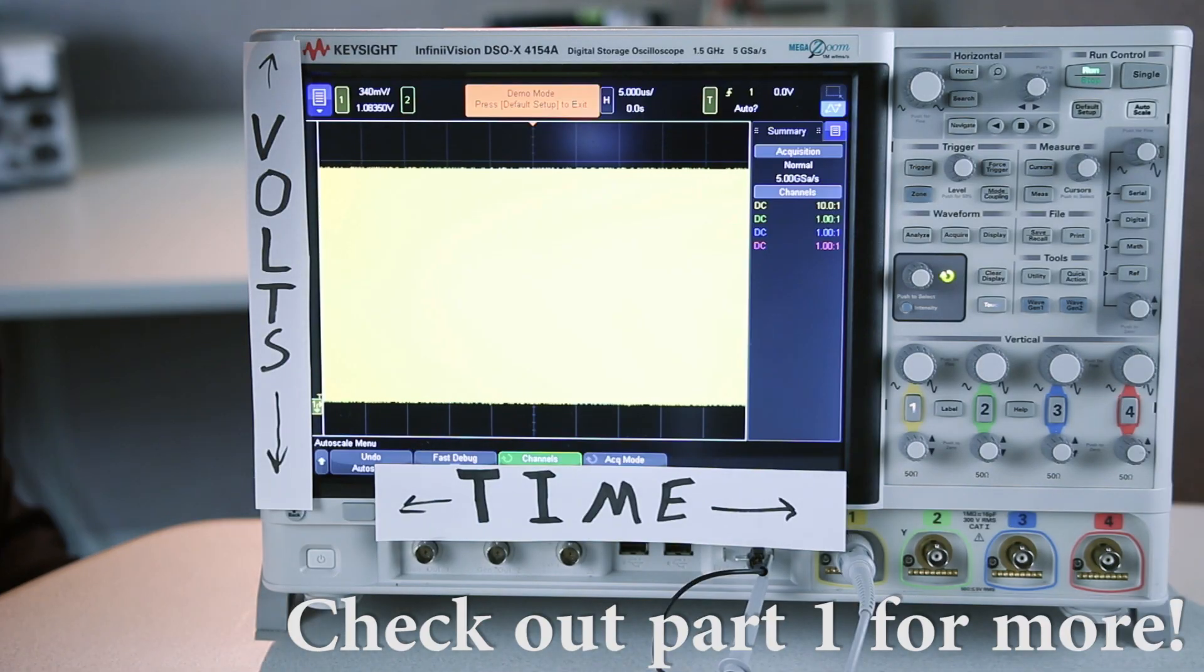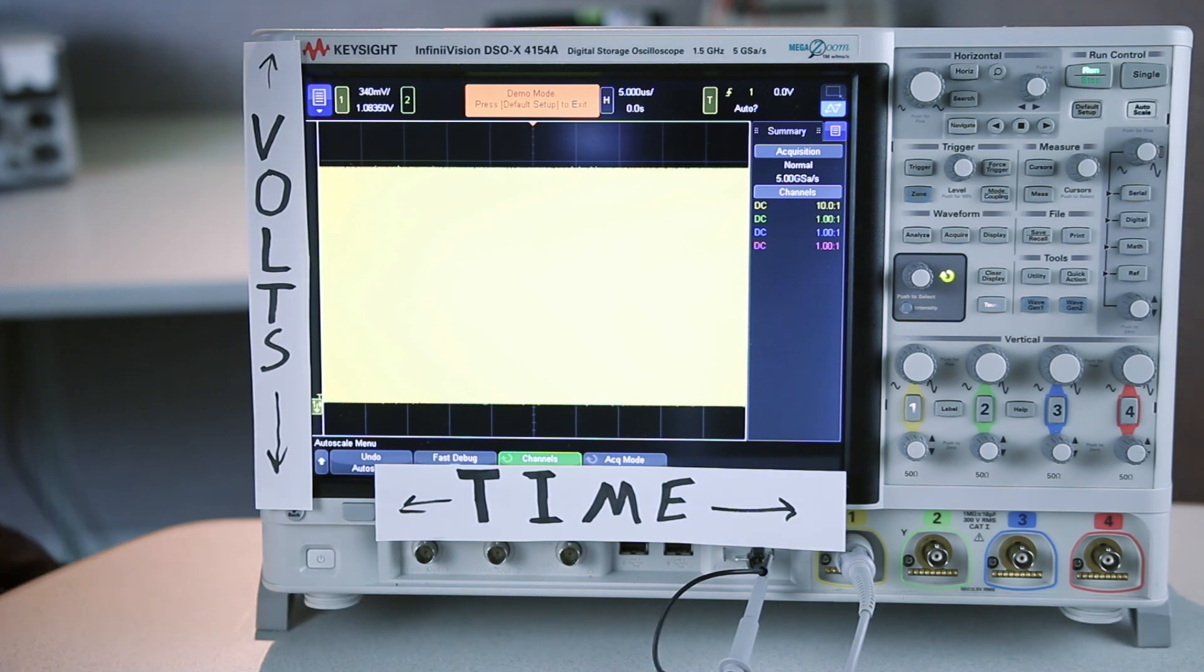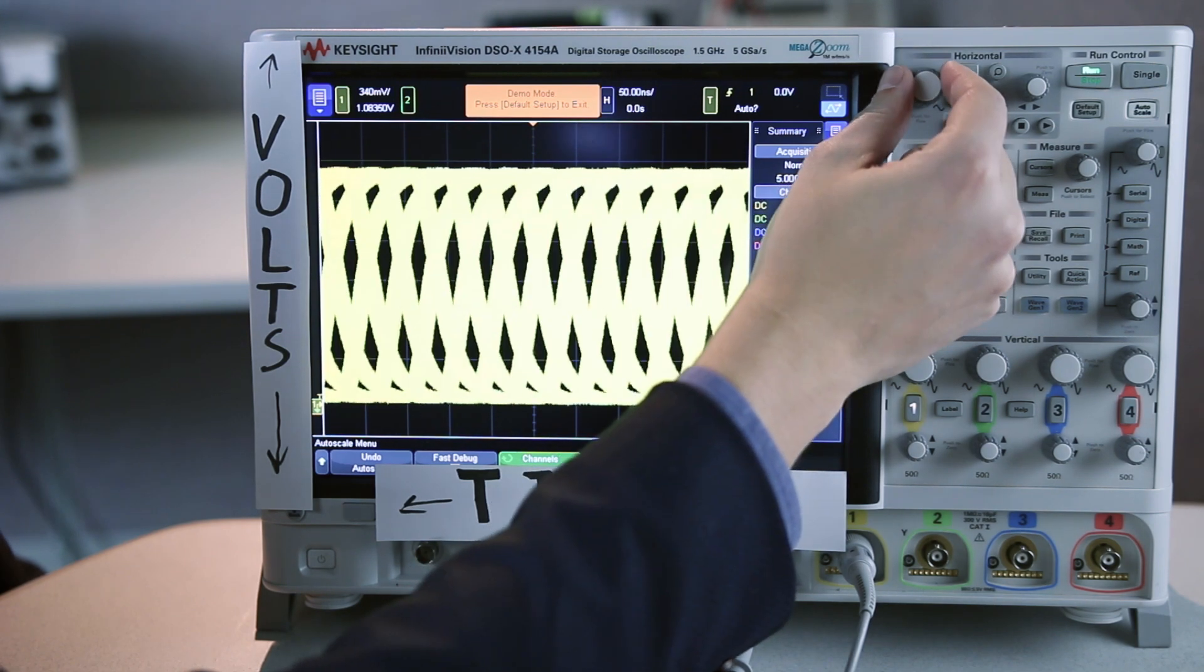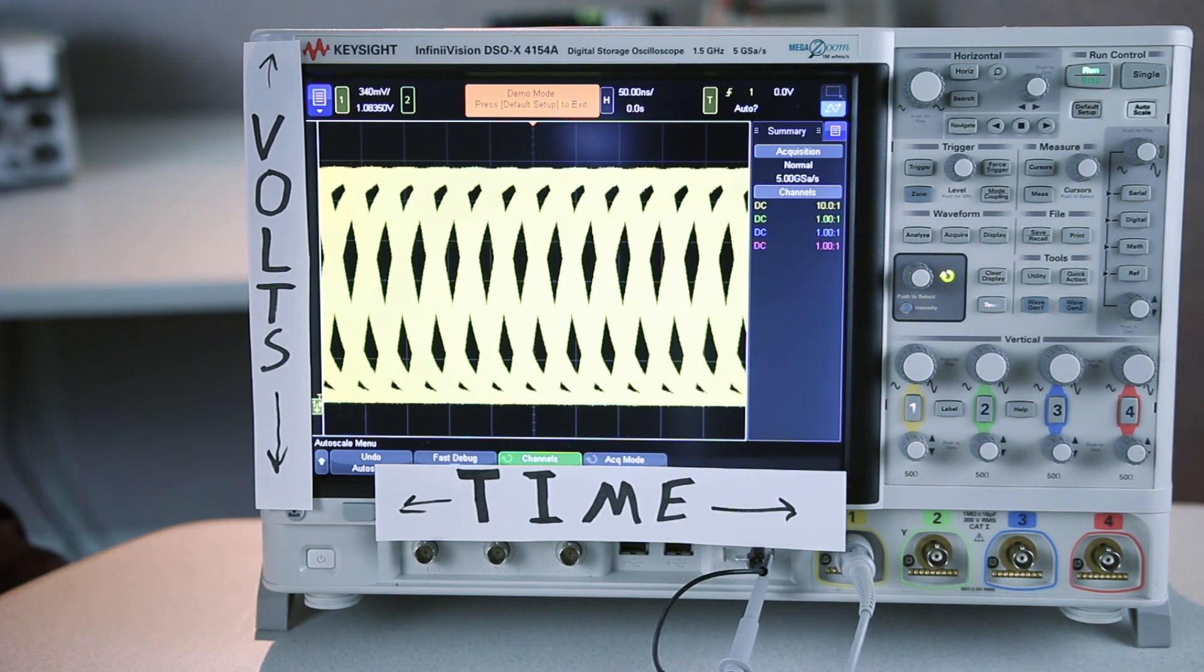So now that we know the very basics of what we're looking at, we want to know how to deal with a signal that looks like this. This is not a helpful signal. The first thing you want to do is take your horizontal knob and zoom in to make sure that you're not zoomed out so far that you can't see what's going on.